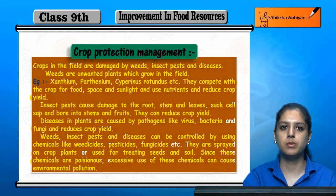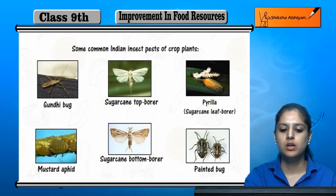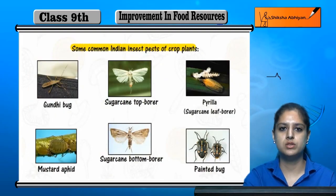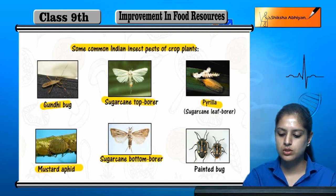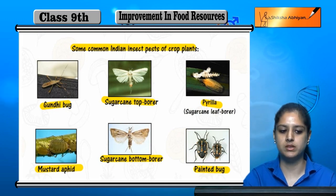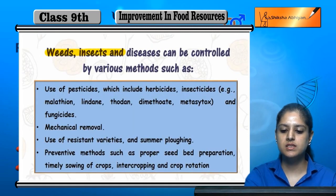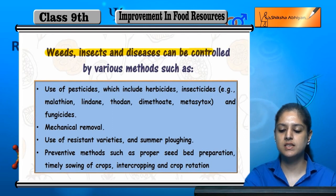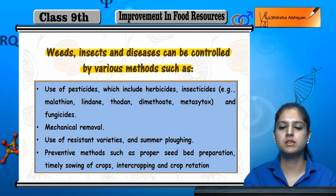This is the basic overview of crop protection management. Now let's look at some common insect pests. These are some of the common insect pests which are bad for crops. Weeds, insects and diseases can be controlled by various methods.